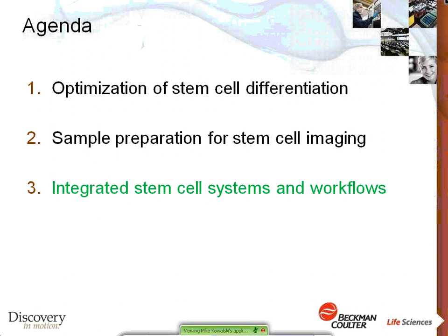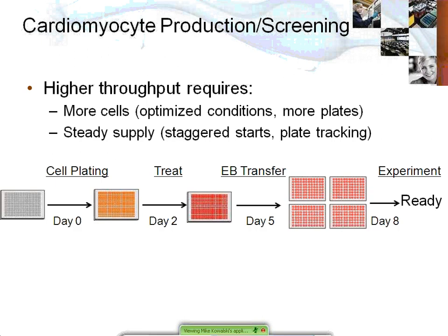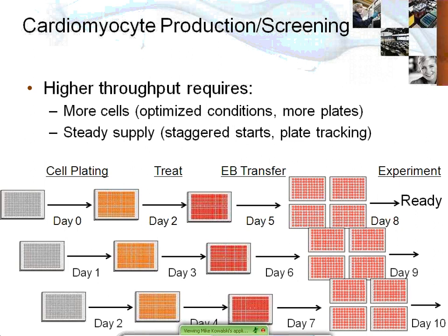For the third and final portion, I'll talk about our integrated stem cell systems and more complex workflows. If you want to use cardiomyocytes for screening, you'll likely need higher throughput — more plates than just one — and a steady supply of cells ready on consecutive days. For an eight-day differentiation process, staggering initial cell plating to have cells ready on days eight, nine, and ten becomes complex: on day two you have to remember to treat the first round while plating the third round. You want a way of tracking plates at various stages in the workflow.